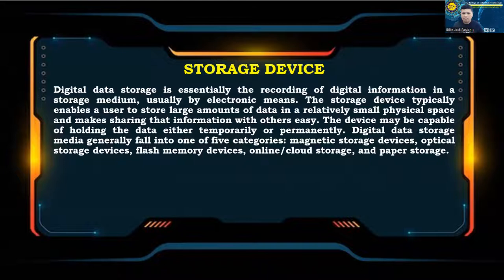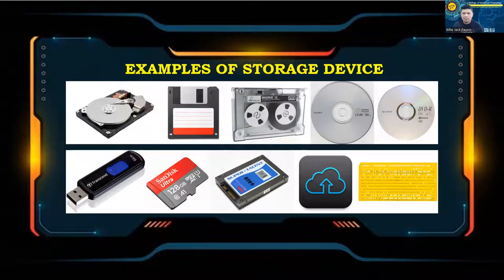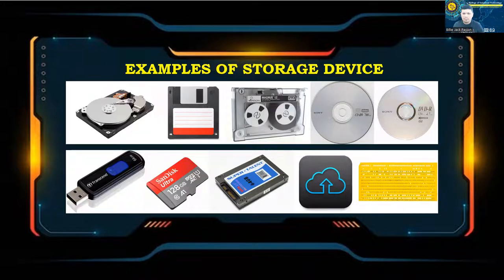Digital data storage is essentially the recording of digital information in a storage medium, usually by electronic means. The storage device typically enables a user to store large amounts of data in a relatively small physical space and makes sharing that information easy. The device may hold data either temporarily or permanently. Digital data storage generally falls into five categories: magnetic storage devices, optical storage devices, flash memory devices, online or cloud storage, and paper storage. Examples include hard disk drives, floppy disks, tapes, CDs, DVDs, Blu-ray disks, USB flash drives, SD cards, solid state drives (SSDs), cloud storage, and punch cards.